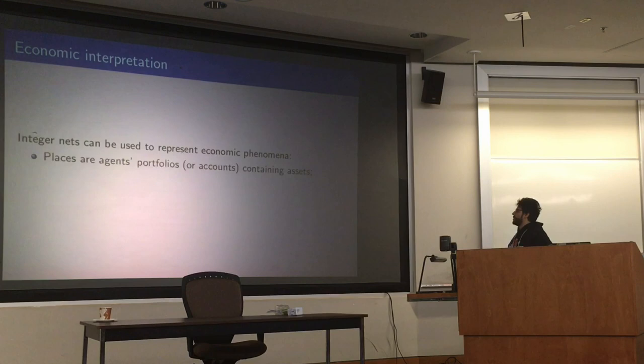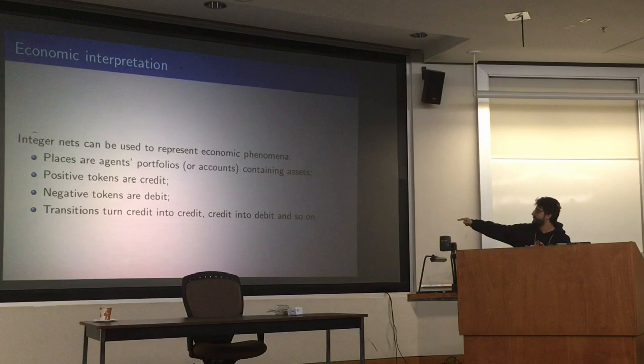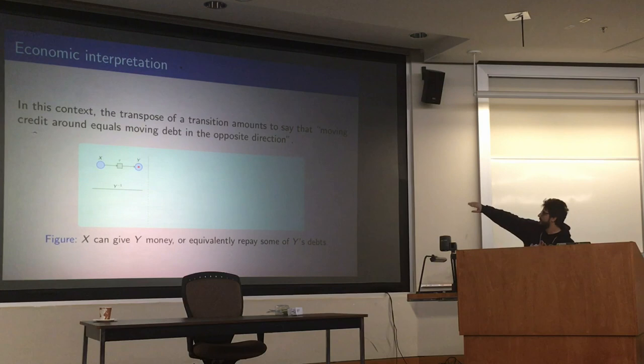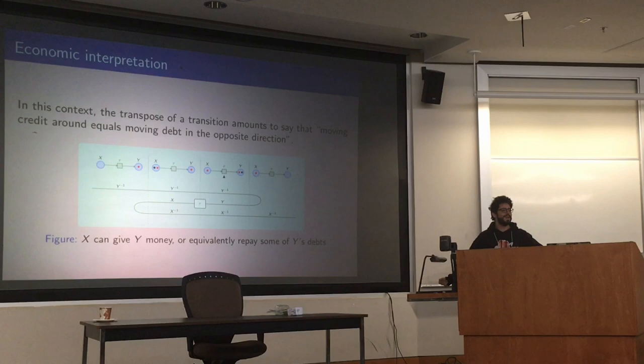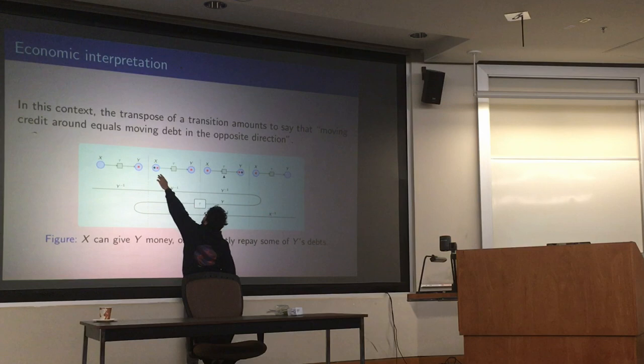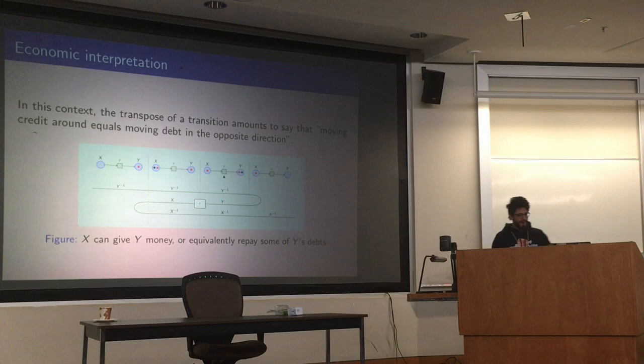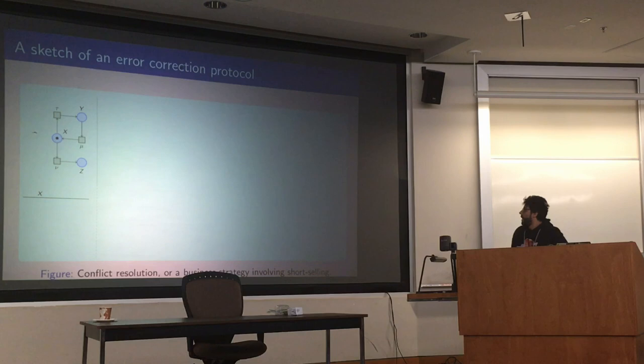Another interpretation for this stuff is economics. Places represent portfolios, so assets of different agents. Tokens are credit if they are positive, they are debit if they are negative, and transitions can turn credit into credit, credit into debit, and so on. In this case, what this transpose thing means is that giving money to someone equals buying their debt. So you can see this as x is making a debt to give y money to repay y's debt. So again, money flows forward, debt flows backwards, or in the opposite direction.